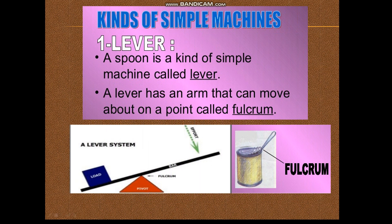Kinds of simple machines: A lever is a simple machine that is made up of a rod resting at a point called the fulcrum, around which it turns. It is used to lift or move heavy weights, cut things, or open the lid of a tin. When we use a spoon to open the lid of a tin, the spoon acts as a lever.